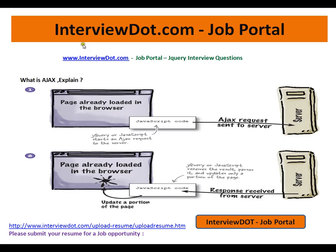Let's see an example so you can understand. This is the browser and this is the server. The page is loaded, you've done something — say you are typing — and internally what happens is JavaScript or jQuery starts an AJAX request. Behind the scenes, the AJAX request is sent to the server, the server processes it, and sends back the response in XML format or JSON format. The user will not even know the request has been sent.